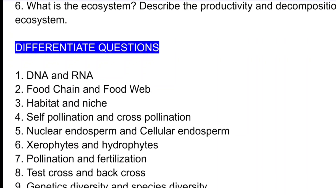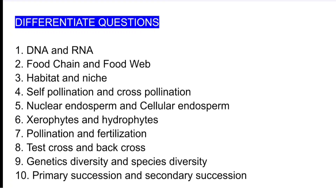Next: self-pollination and cross-pollination — differentiate self-pollination and cross-pollination. This is a very important question. The next question is nuclear endosperm and cellular endosperm.